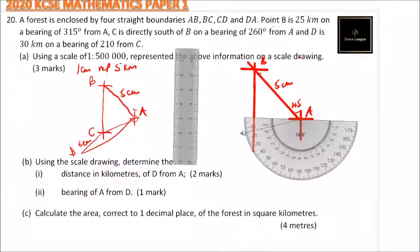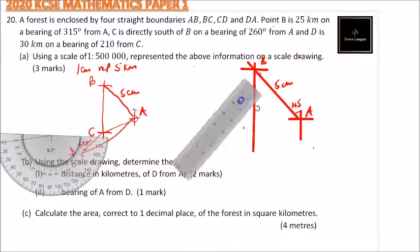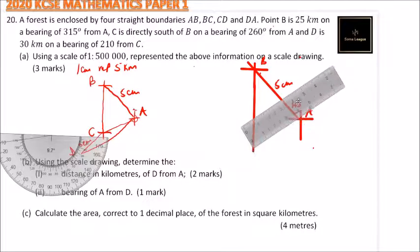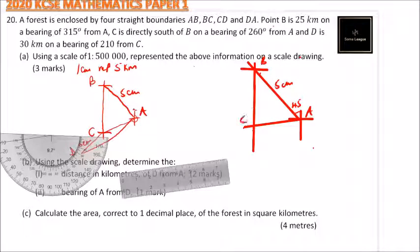The angle here, up to this point, is 270°. That is where we get our mark. Once you get that, you use a ruler to connect that point. We can now locate the position of C. Since C is directly south of B, this angle is 270°, and this is where we have our point C.